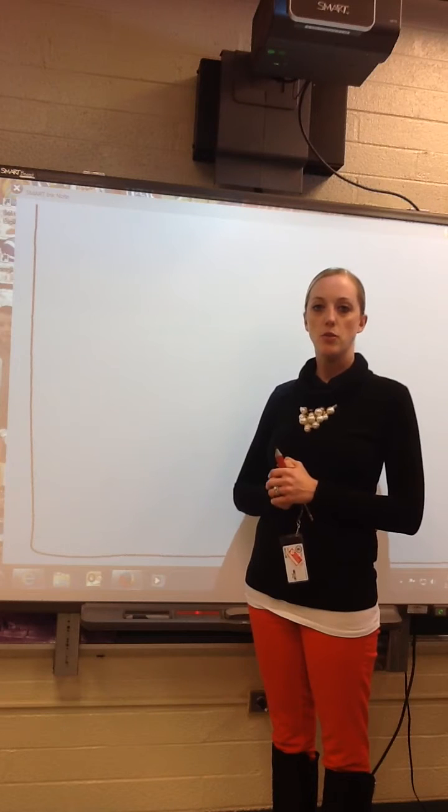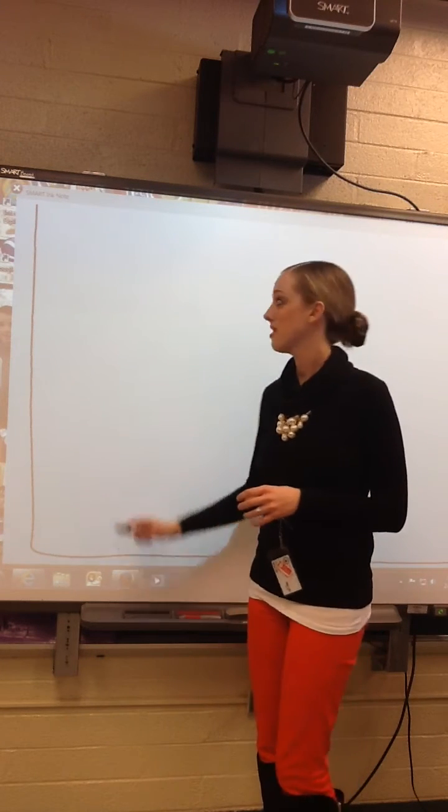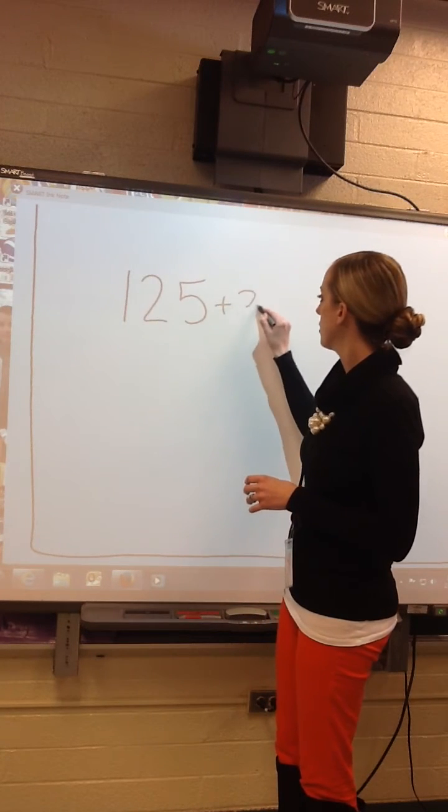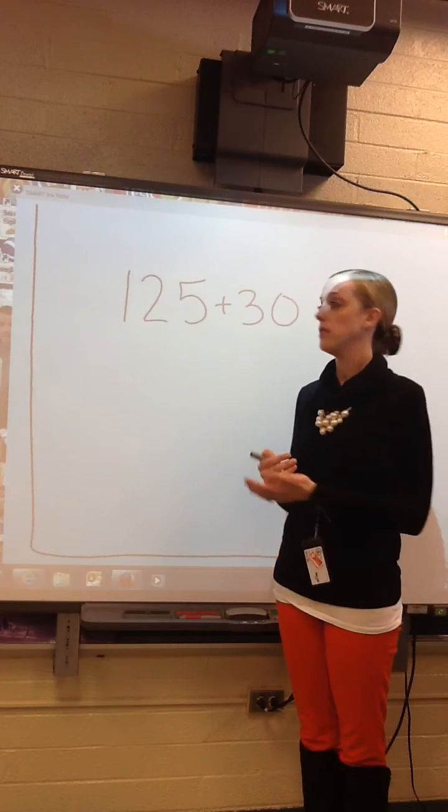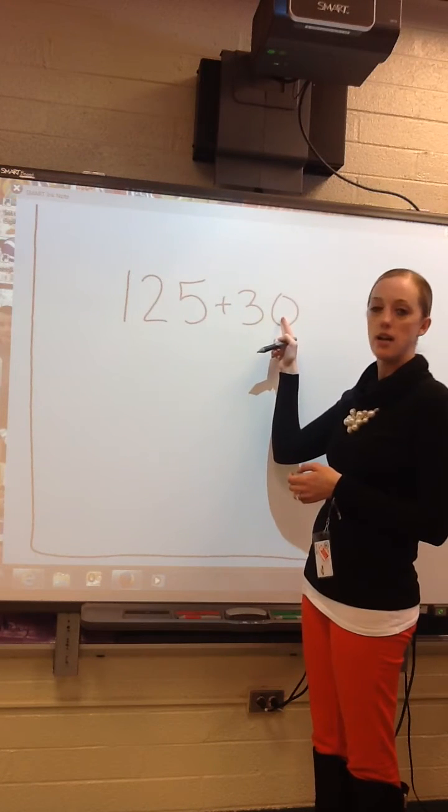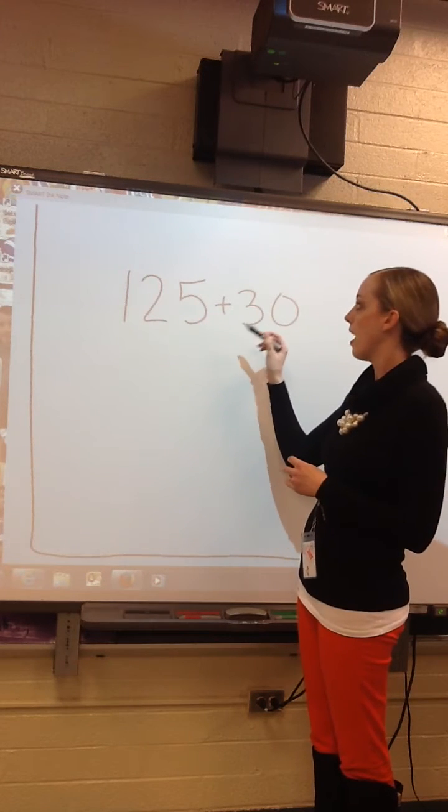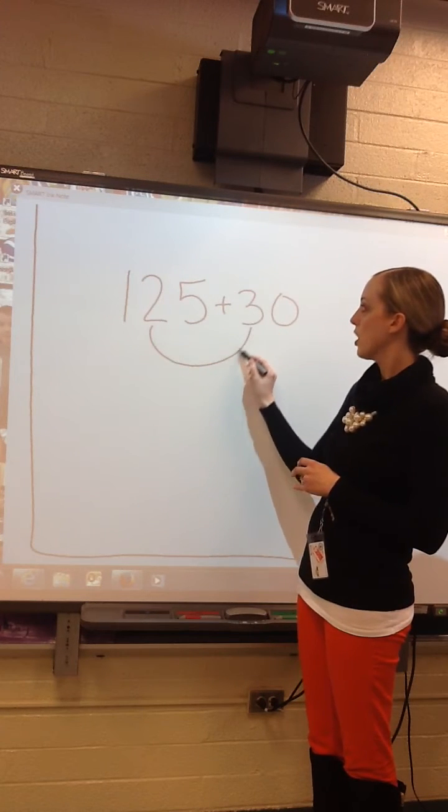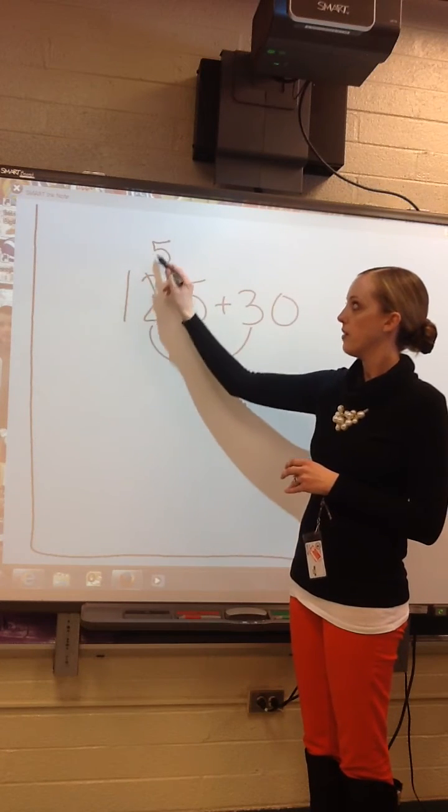Next is mental math strategy 2 for addition, and this is adding tens. If I had 125 plus 30, I would say, am I adding hundreds, tens, or ones? I'm adding tens. Because there are no ones, it's not necessary to add them to the other ones. Because anything plus 0 would stay the same. So I'm adding the tens, which is 30 and 20. 30 and 20 is 50. So my sum is 155.